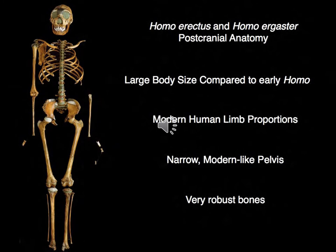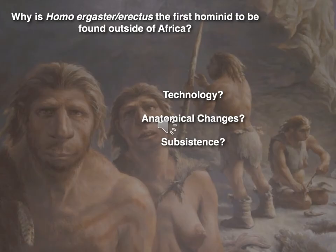The Turkana specimen shows a much larger body size compared to Rudolfensis and Habilis, with modern human limb proportions, a modern pelvis, and very robust bones suggesting they traveled long distances — in fact, stronger bones than even modern humans today. The big question is: why did Homo erectus/ergaster leave Africa? Is it because they had better technology? Once they had those anatomical changes, could they move faster, travel longer distances? Did they have other changes in the way they obtained food? We do think they were able to cooperatively hunt.